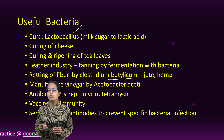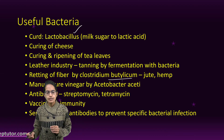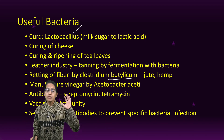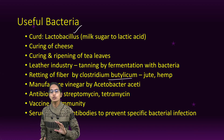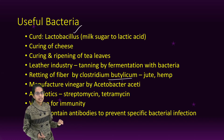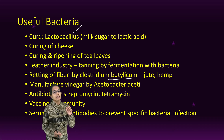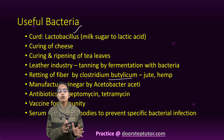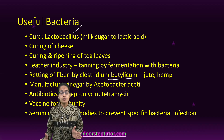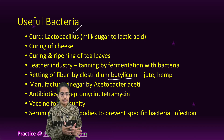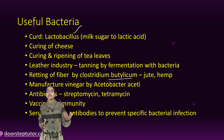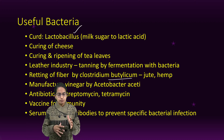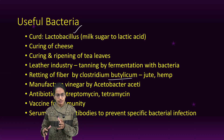Bacteria are used for the preparation of antibiotics — streptomycin is a common example. Similarly, fungi are also used for preparation of antibiotics; Griseofulvin is one common example. Preparation of vaccines for immunity purposes is again where bacteria are used. Serum is again important for specific bacterial infection.